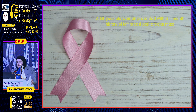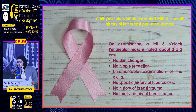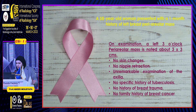We present a 58-year-old female who presented with about a one-month history of left breast peri-areolar mass. On examination, the clinician felt about a 3x3 cm lesion, peri-areolar in location. There are no associated skin changes, no nipple retraction, and the axilla looks fine with no lymph node enlargement. She has no specific history of tuberculosis, breast trauma, or any family history of breast cancer.